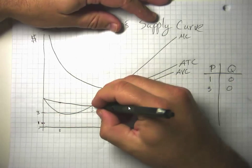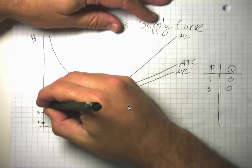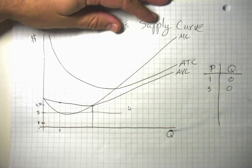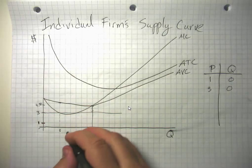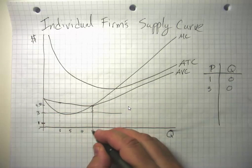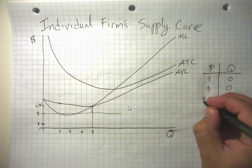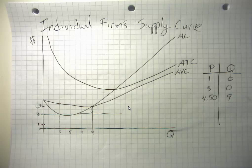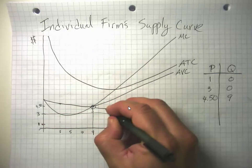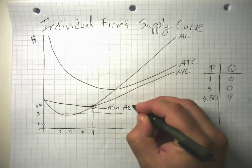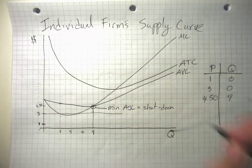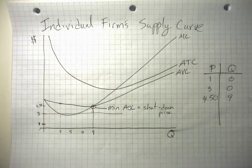Once price rises to about $4.50, this firm is finally willing to supply something. At a price of $4.50, this firm is willing to supply nine units. It's willing to have its business be open at all once price reaches about $4.50. Remember that this is the minimum of the average variable cost curve, which is our shutdown price. We need to at least hit that shutdown price before this firm is willing to supply anything at all.